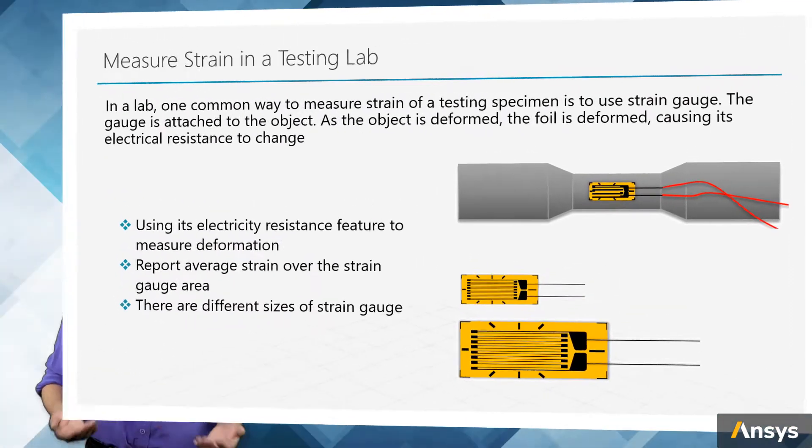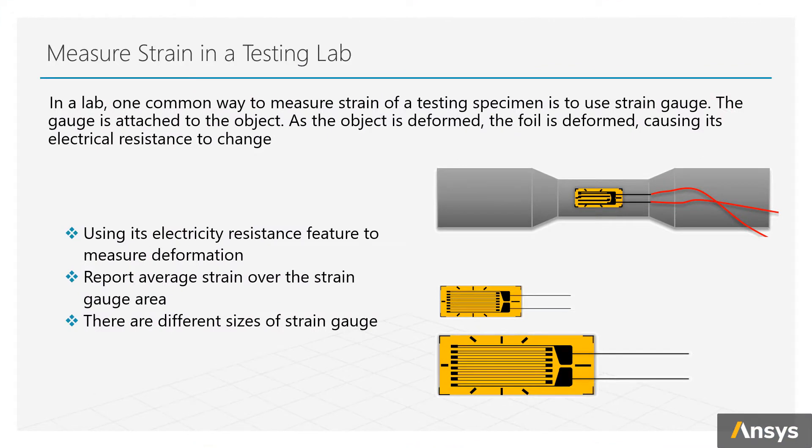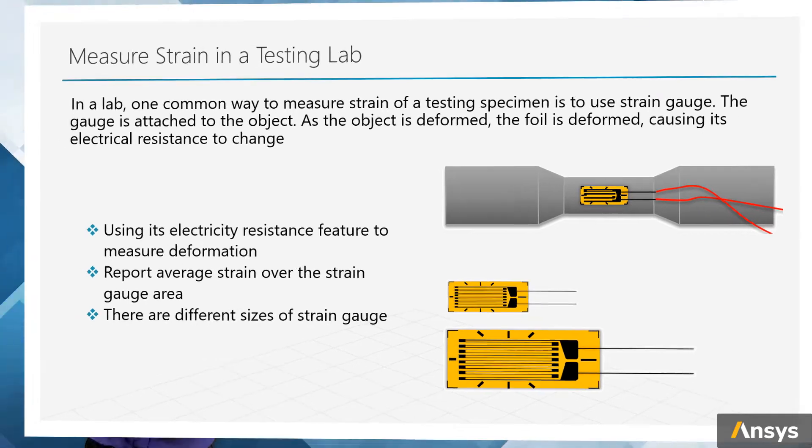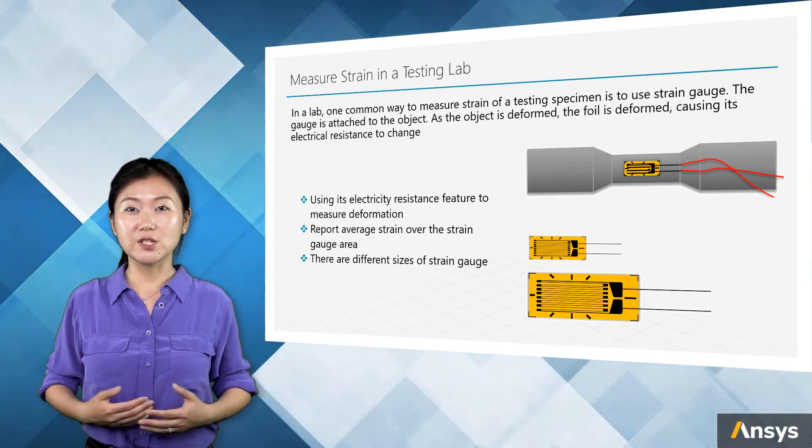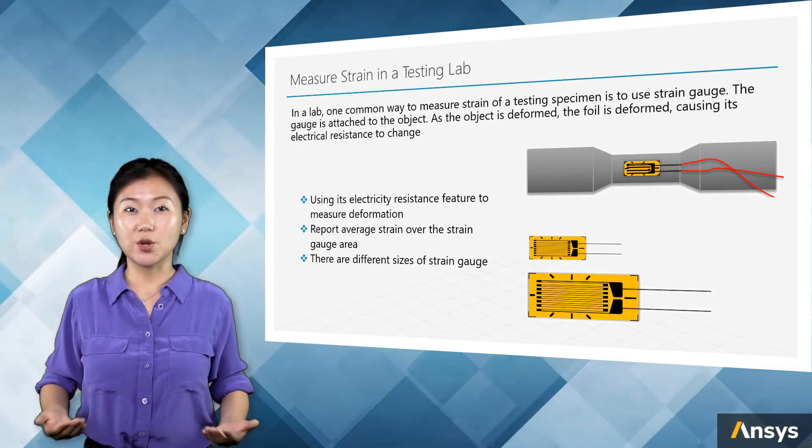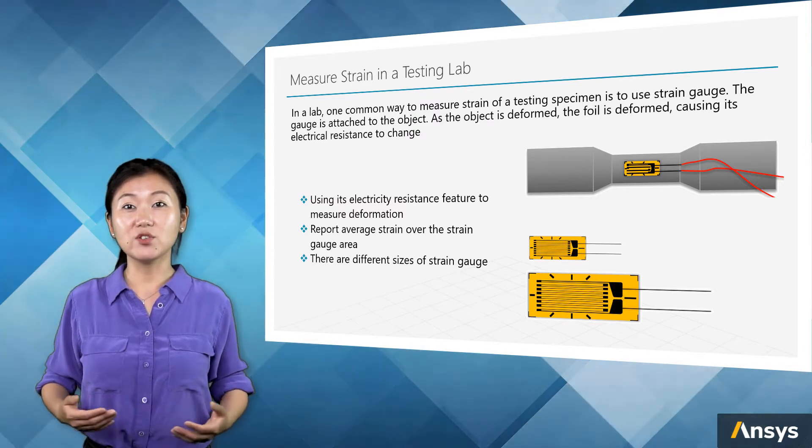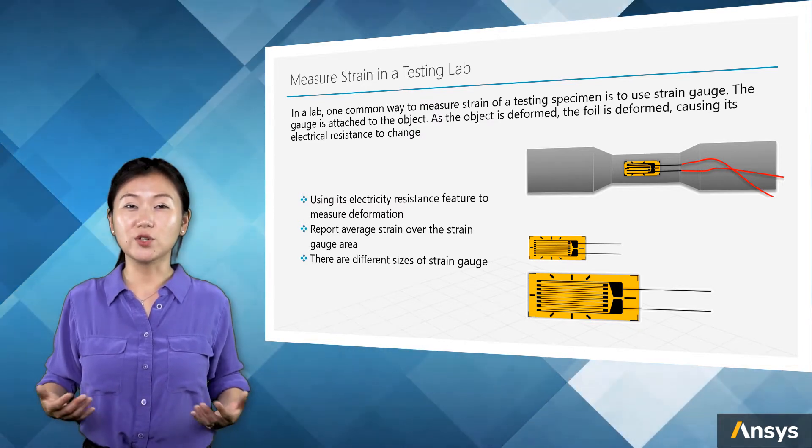So in a testing lab, one common way to measure strain of a specimen is to use strain gauge. The gauge is attached to the object. As the object is deformed, the foil of the strain gauge is deformed, causing its electrical resistance to change, so that strain is detected and reported. Note that the reported strain is an average value over the strain gauge area, and there are different sizes of strain gauge to use for different situations.